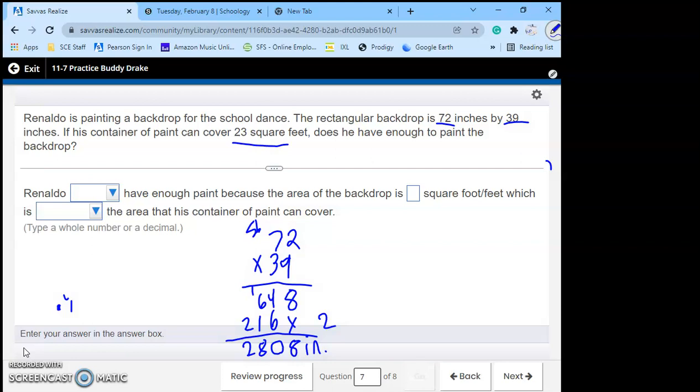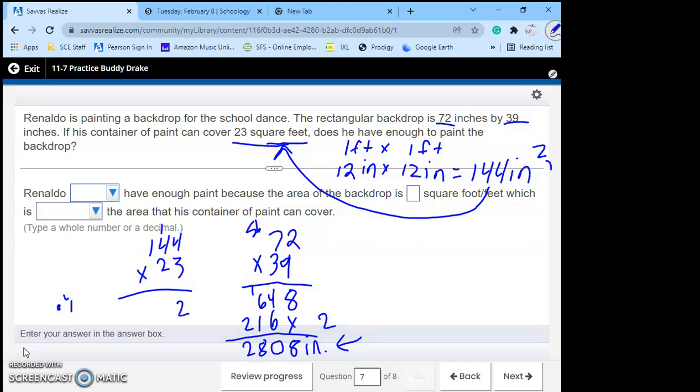So the other one is square feet. But this is square inches. A square foot is one foot times one foot, which would be 12 inches times 12 inches. 12 times 12 is 144 square inches. So that is how many square inches is in a square foot. So we have to take this 144 times 23 to see how much paint we have. Four times three is 12. Four times three is 12, plus one is 13. Three times one is three, plus one is four. Placeholder. Two times four. Two times four. Two times one. Add. Two, eleven, thirteen, three. So we have 3,312 square inches of paint. We only need 2,808. So yes, he has enough.